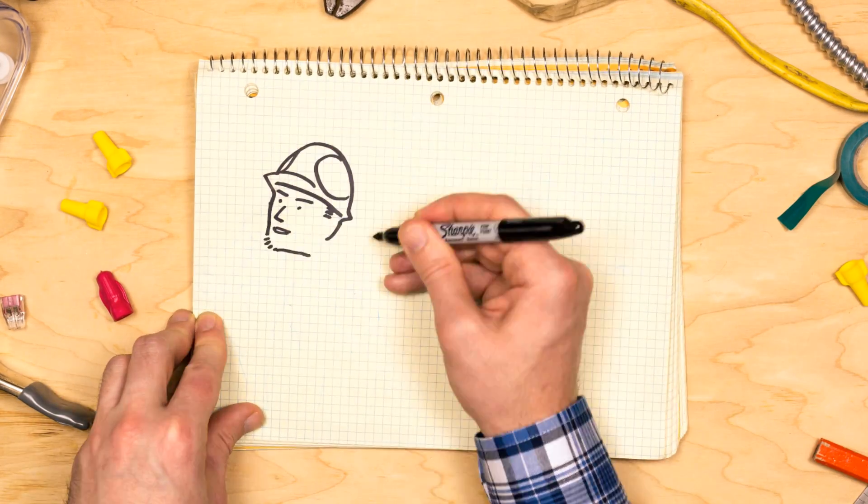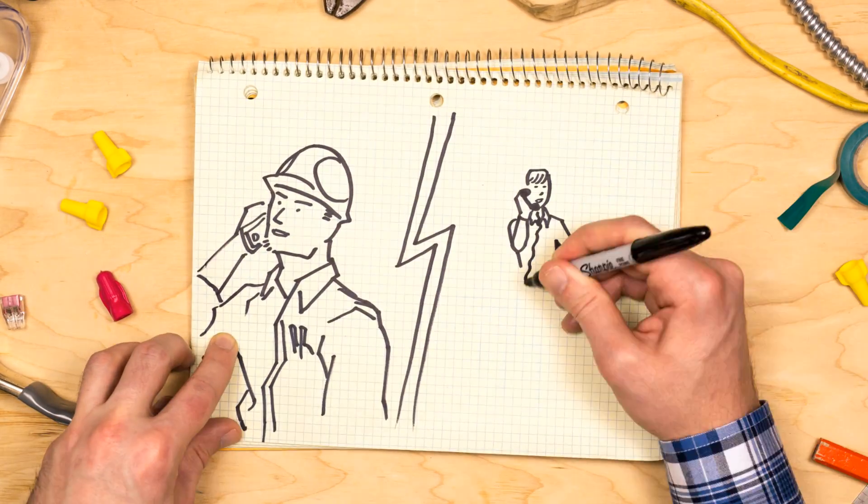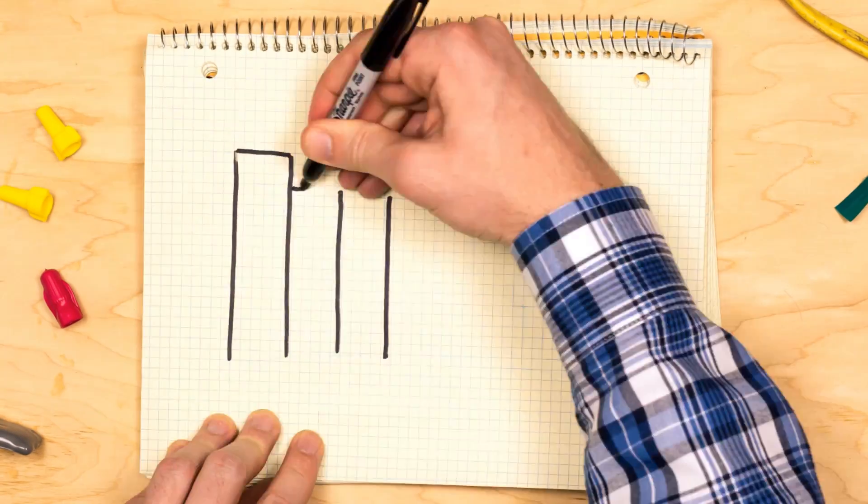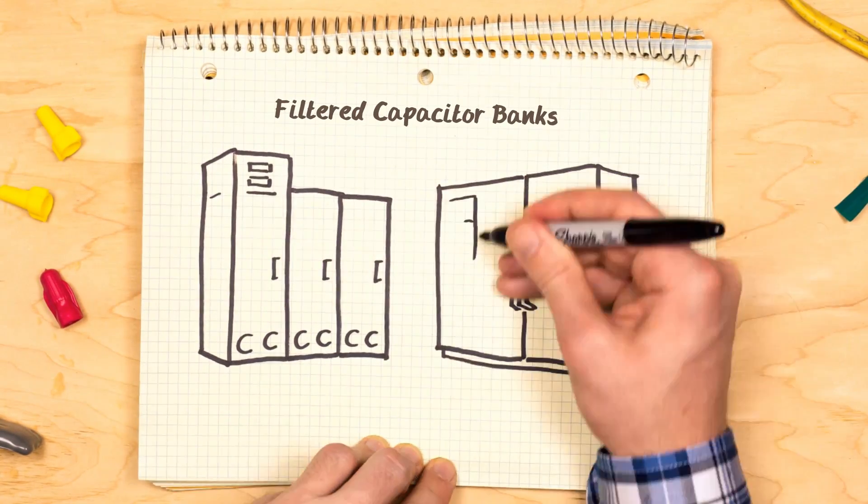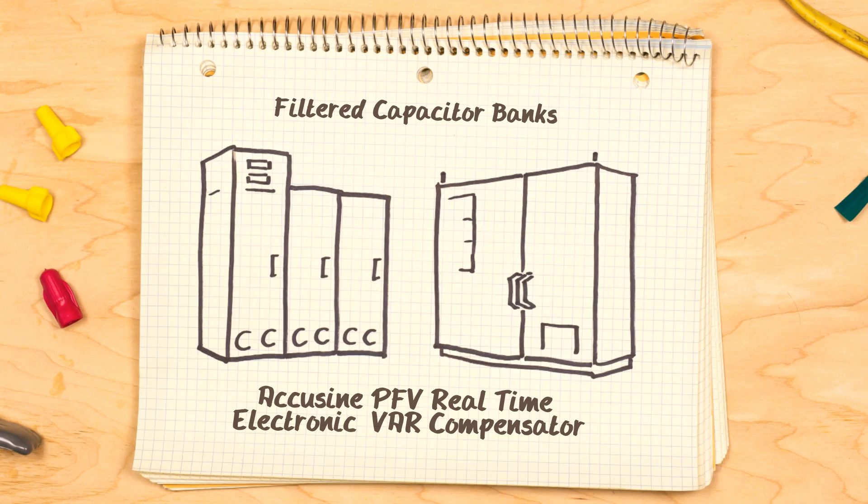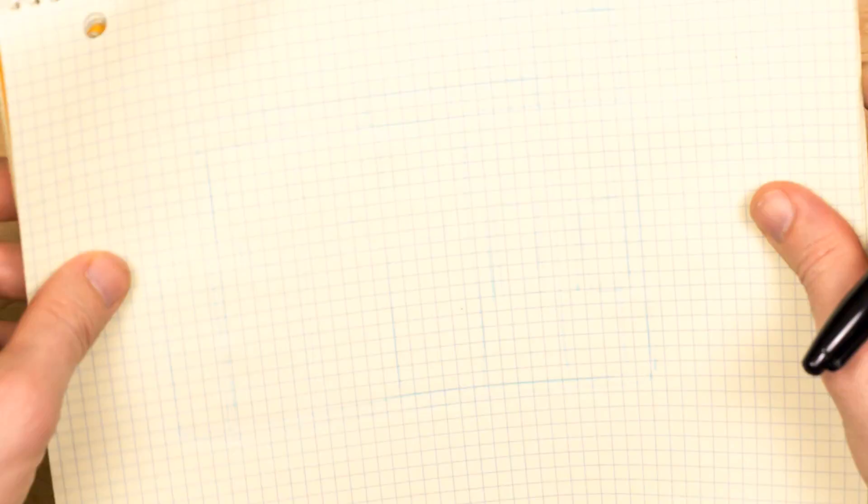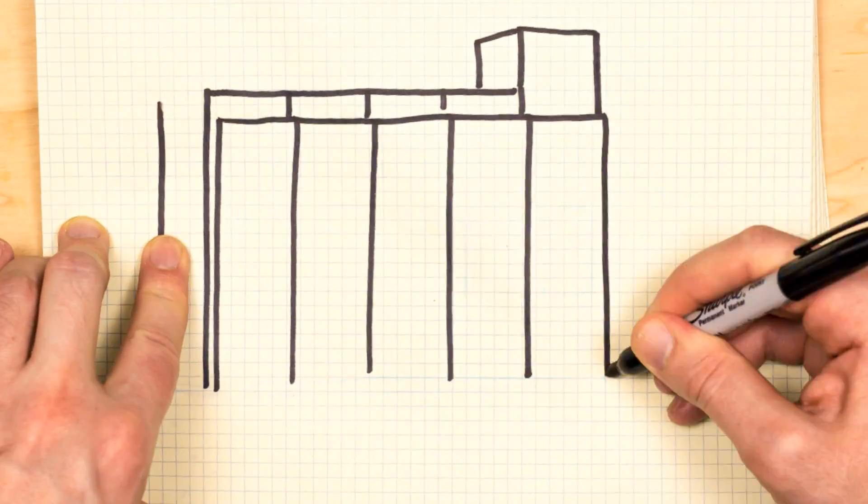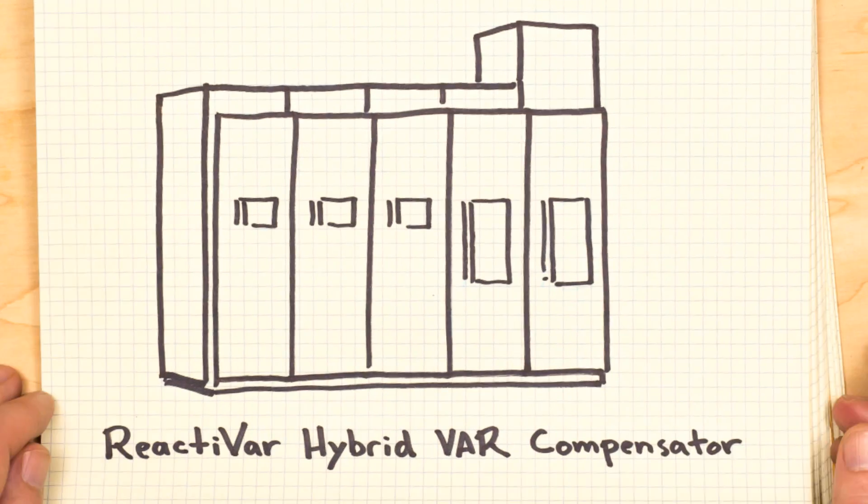Dan makes a quick call to find the best unit for improving the park's power quality. With its filtered capacitor banks and the AccuSign PFV real-time electronic VAR compensator, Dan decides that the Reactiv-R hybrid VAR compensator is the right solution for the park.